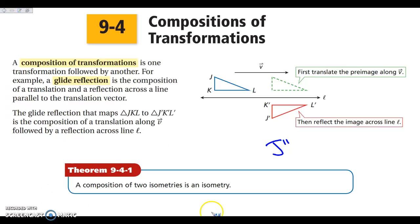Anytime we have more than one isometry, our final transformation is still an isometry, meaning if you never change the size or shape of the figure, then your final figure is going to be the same size and shape as your initial figure.